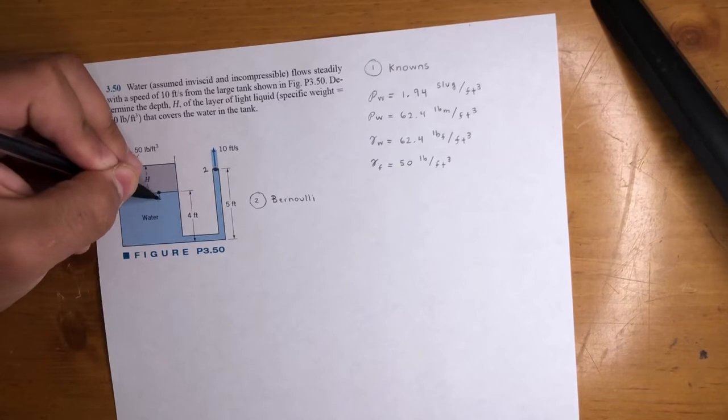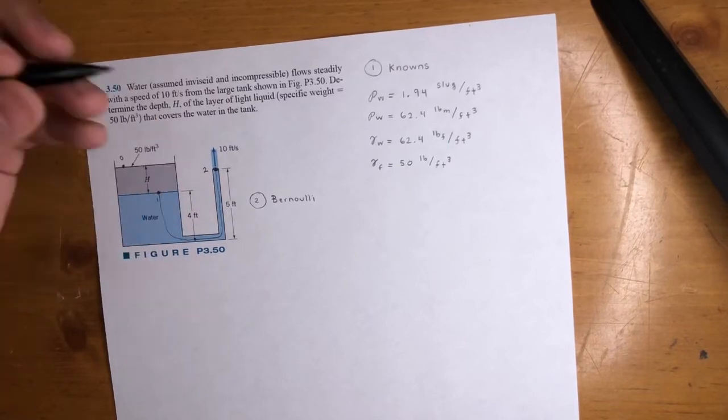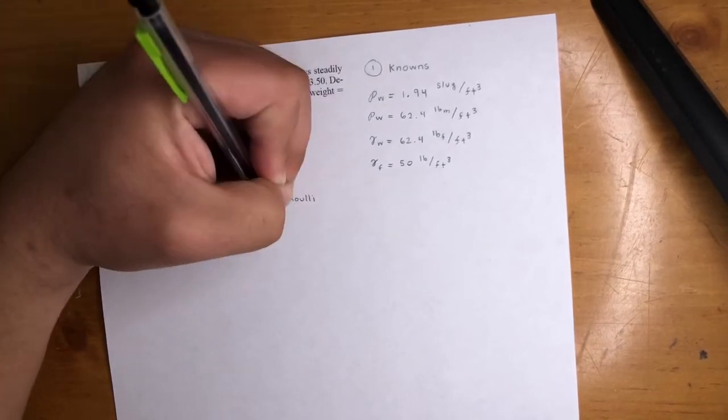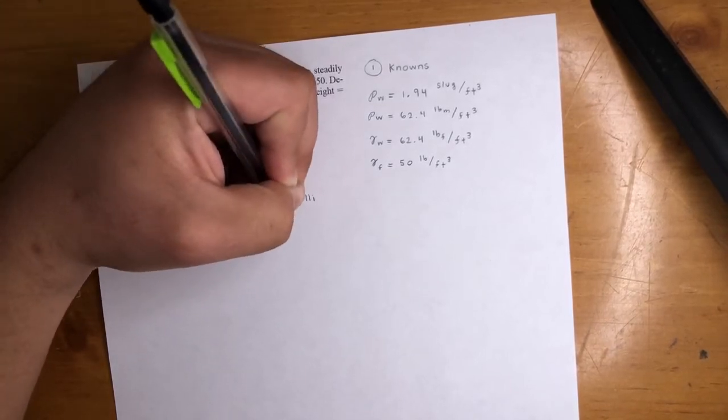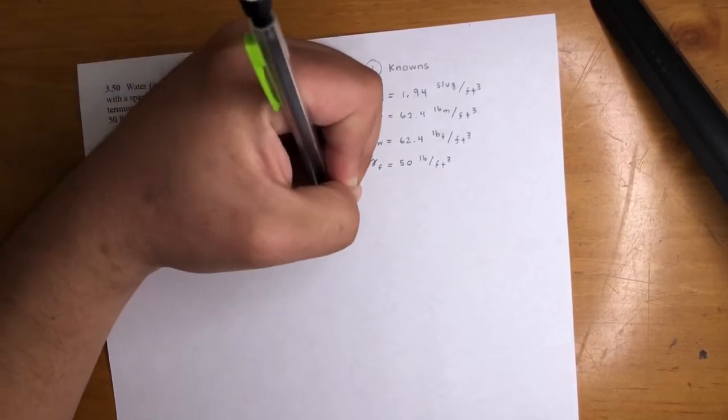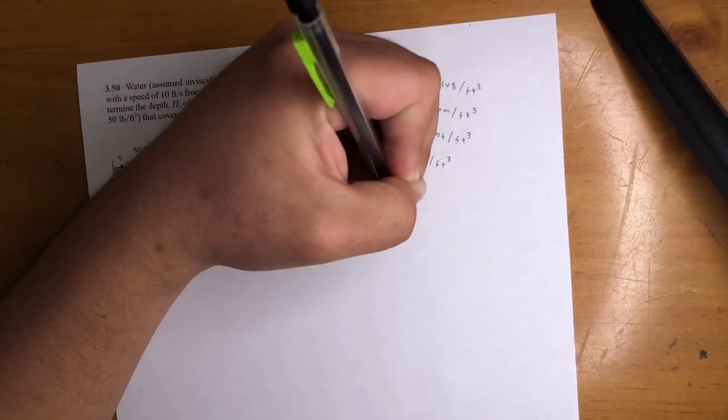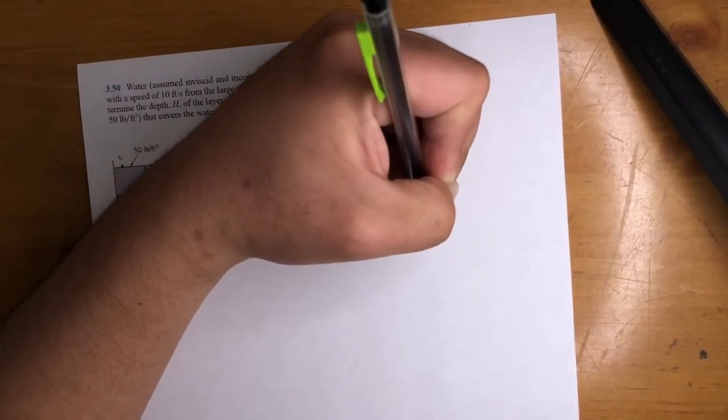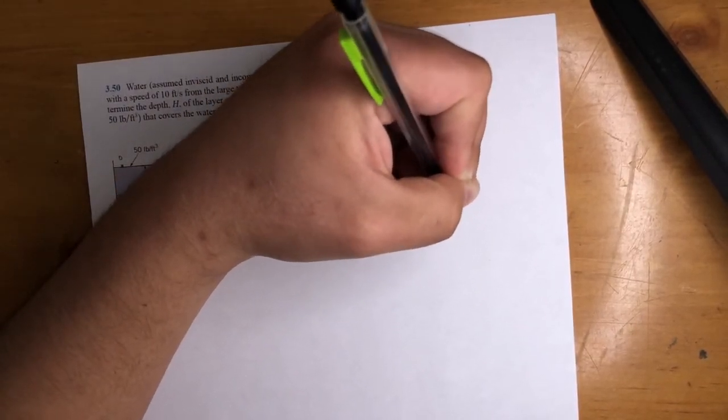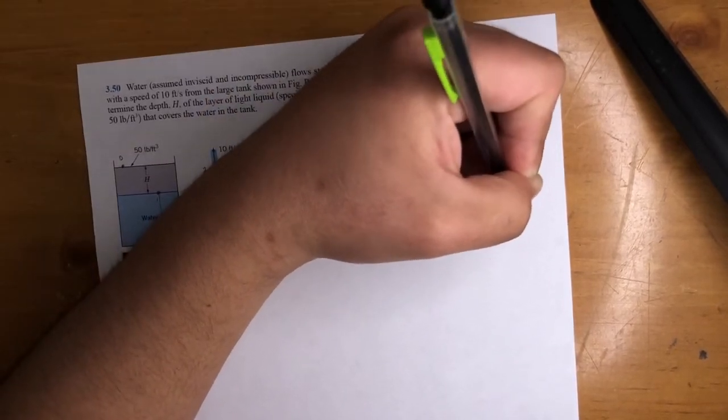There's a streamline going all the way in like that. So let's go ahead and do that. P1 plus one half rho V1 squared plus rho G H1 equals P2 plus one half rho V2 squared plus rho G H2.